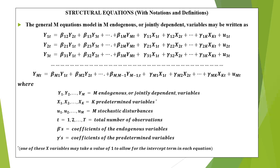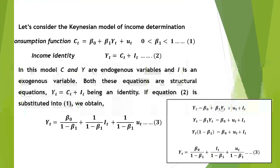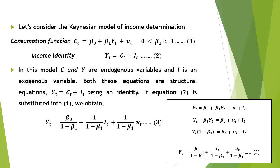The betas and gammas are known as structural parameters or coefficients. Betas are the coefficients of endogenous variables and gammas are the coefficients of exogenous variables. From these structural equations, one can solve for the m endogenous variables and derive the reduced form equations and their associated reduced form coefficients. A reduced form equation is the one that expresses an endogenous variable solely as a function of the predetermined variables and the stochastic disturbances.